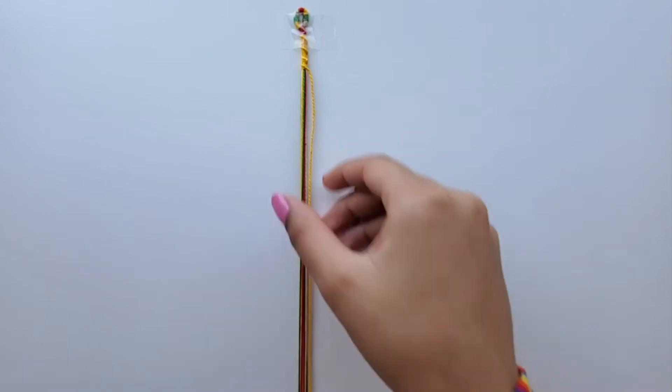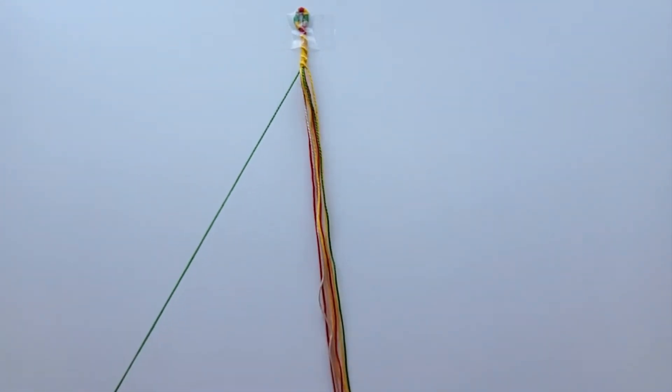To switch the colors, go to the next left string and then make forward knots again.